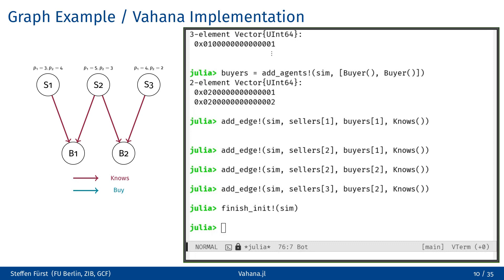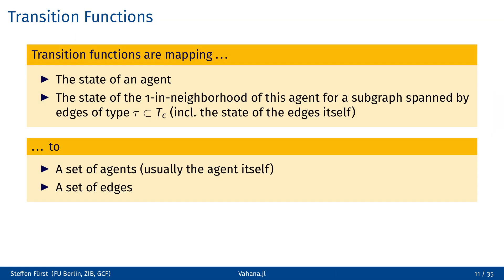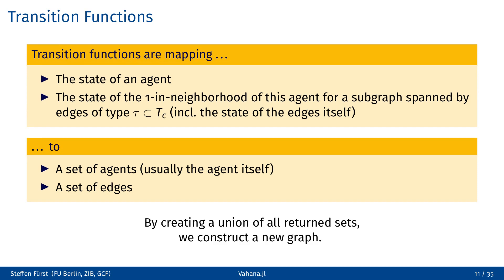So far we have created an initial state, but we also need a method to change this state. We do this with so-called transition functions. These transition functions are mappings that take the state of an agent and the state of the neighborhood of this agent for a subgraph spanned by a subset of the edge types. In this context, the neighborhood includes all agents located at the source of the edges leading to the agent in question. If these agents themselves possess a state, the state can also be considered in the transition function.